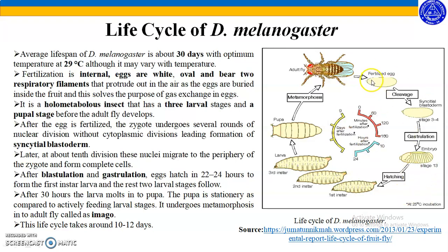After the egg is fertilized, the zygote undergoes several rounds of nuclear division without cytoplasmic division, leading to formation of a syncytial blastoderm. At about the 10th division, these nuclei migrate to the periphery of the zygote and form complete cells. After blastulation and gastrulation, eggs hatch in 22 to 24 hours to form the first instar larvae, and the remaining two larval stages follow. After 30 hours, the larva molts into a pupa. The pupa is stationary compared to the actively feeding larval stages and undergoes metamorphosis into an adult fly called the imago. The life cycle takes about 10 to 12 days.